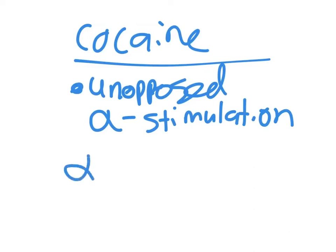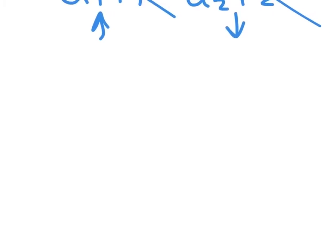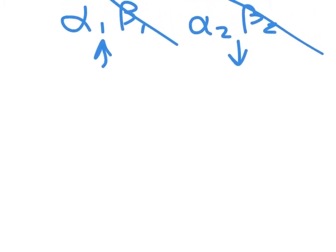With unopposed alpha stimulation, remember that alpha-1 and beta-1 will increase the blood pressure, while alpha-2 and beta-2 will cause a relative decrease in blood pressure. It would seem like if I knocked out alpha-2 and beta-2, I have balanced myself out, but that's not the case. Alpha stimulation is always going to increase blood pressure — it's always going to cause vasoconstriction.